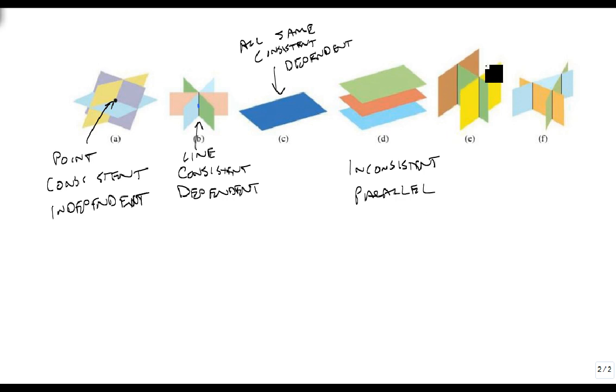Here's a case where two are parallel, but the third one cuts them. But here, notice this black line only works for the green one and the brown one, and this black line only works for the yellow one and the green one. There's nowhere that they both want to do, so again, this is inconsistent.